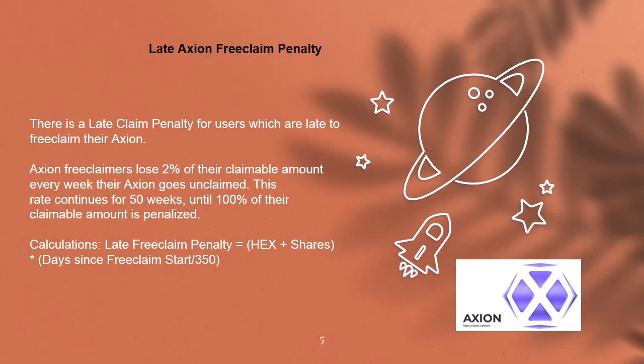Late Axion free claim penalty. There is a late claim penalty for users who are late to free claim their Axion. Axion free claimers lose 2% of their claimable amount every week their Axion goes unclaimed. This rate continues for 50 weeks, until 100% of their claimable amount is penalized.